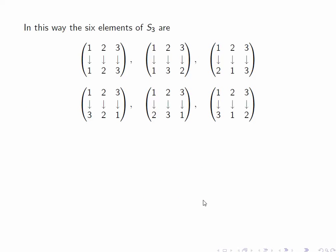In this way, we can list all 6 elements of S3. The first element is the identity permutation. The second element switches the elements 2 and 3 and leaves 1 fixed. This element switches 1 and 2. This one switches 1 and 3.